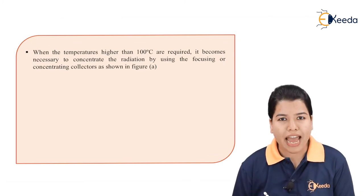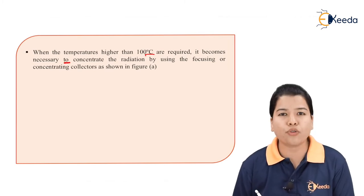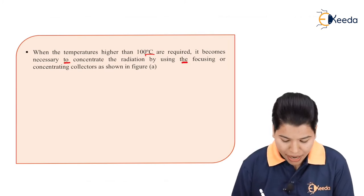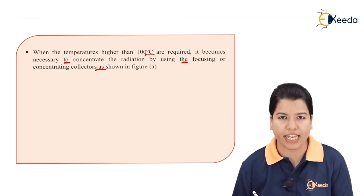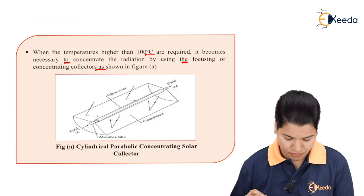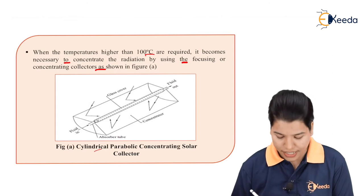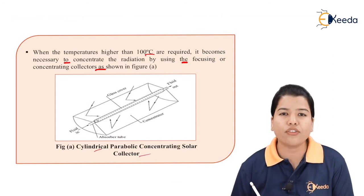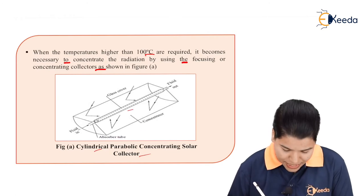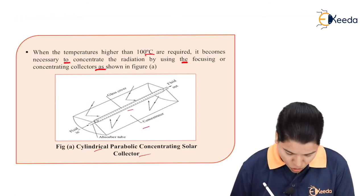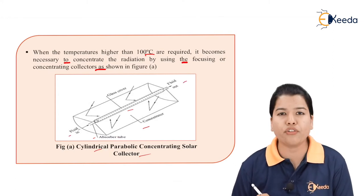When temperatures higher than 100 degree centigrade are required, it becomes necessary to concentrate the radiation by using focusing or concentrating collectors which are shown in figure A. Figure A shows the cylindrical parabolic concentrating solar collector. Let us see the various parts. Here we can see there is one glass cover, then these are the concentrators, also we have one absorber tube and this is for the fluid inlet and here we have the fluid outlet.